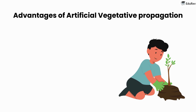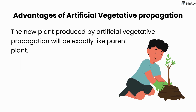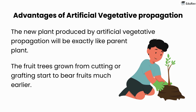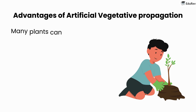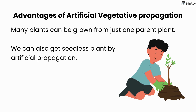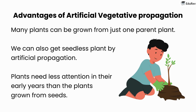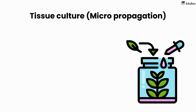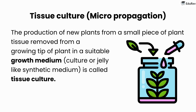The advantages of artificial vegetative propagation are: the new plant produced will be exactly like the parent plant; fruit trees grown from cutting or grafting start to bear fruits much earlier; many plants can be grown from just one parent plant; we can also get seedless plants by artificial propagation; and plants need less attention in their early years than plants grown from seeds. Tissue culture is the production of new plants from a small piece of plant tissue removed from the growing tip of a plant, placed in a suitable culture or jelly-like synthetic growth medium.